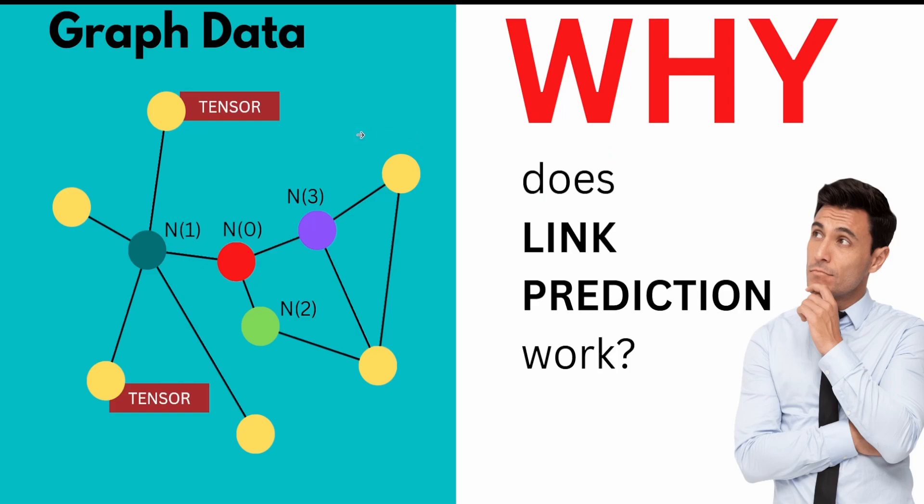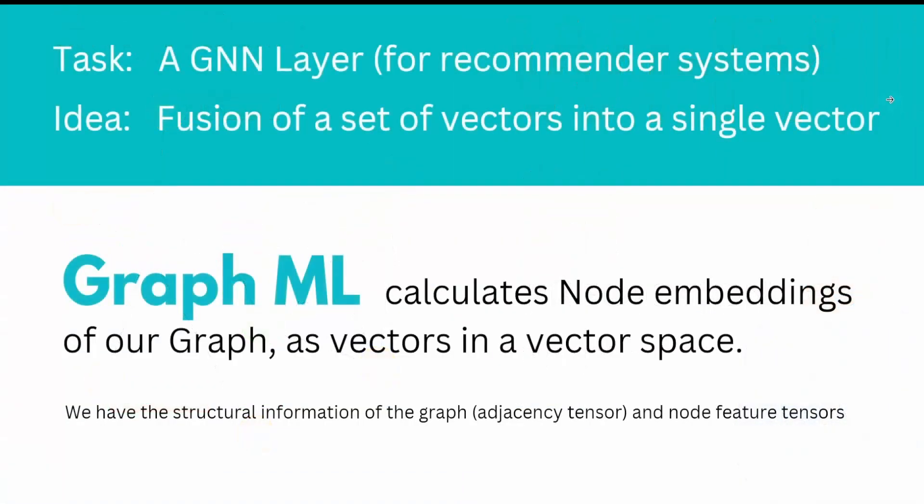What is the theory, the underlying reason that link prediction and graph machine learning works?